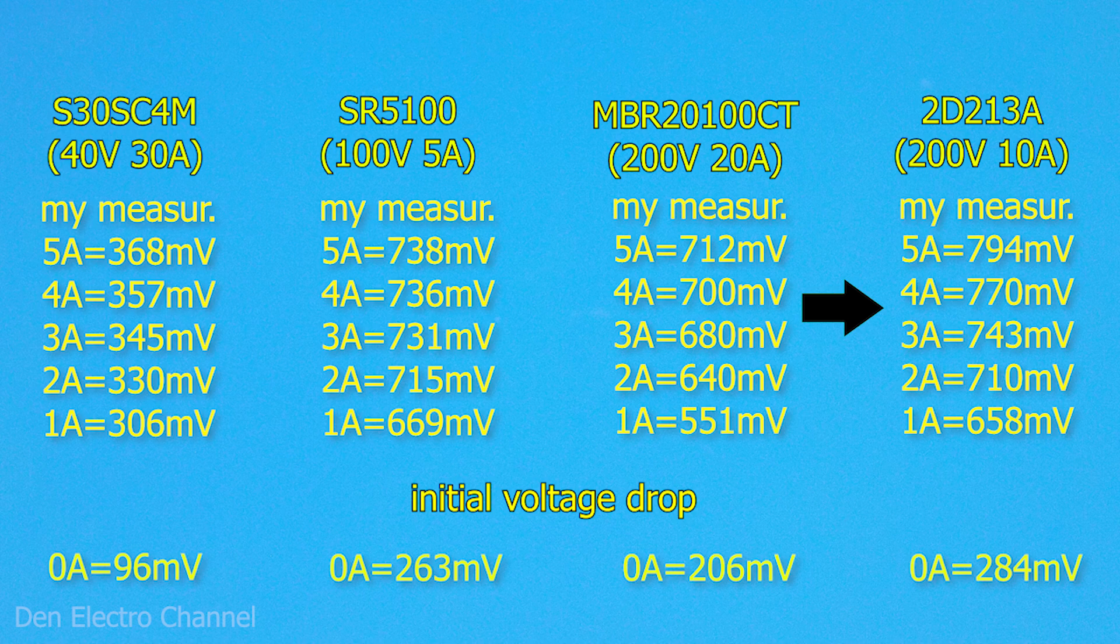Judging by the datasheet graph, at a current of 10 amps, the voltage drop will be 1 volt. While on MBR20100CT diodes at 10 amperes, the voltage drop will be only 750 millivolts.